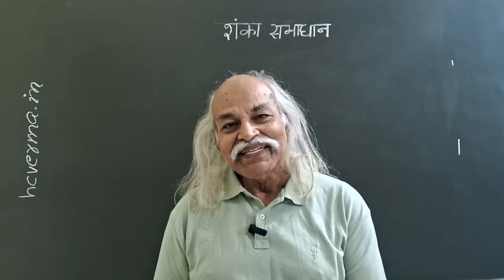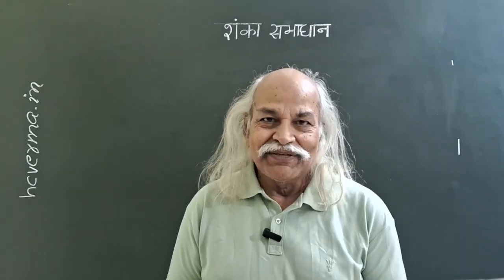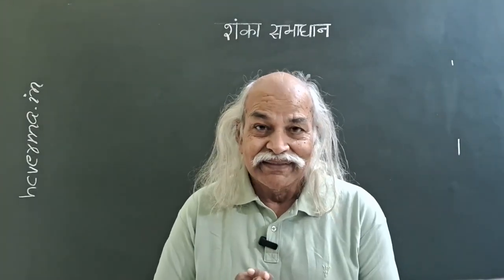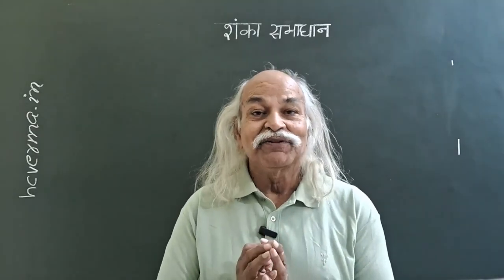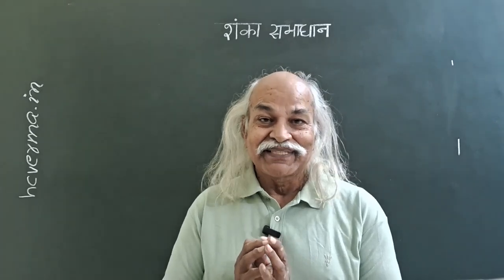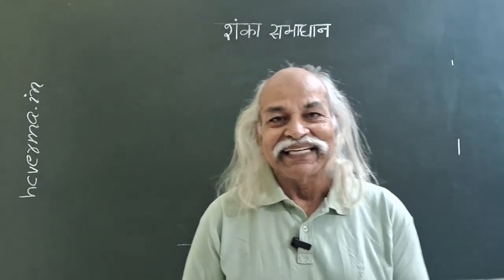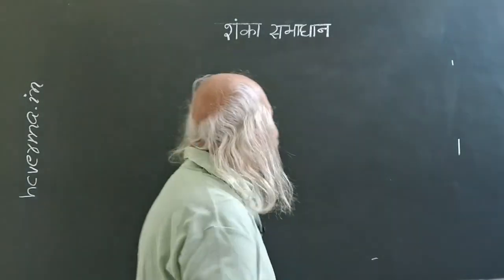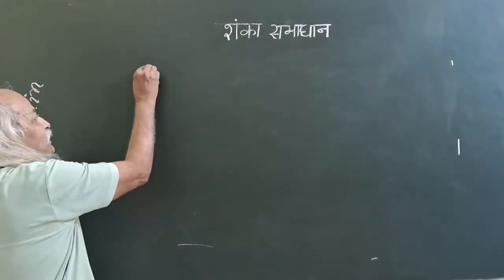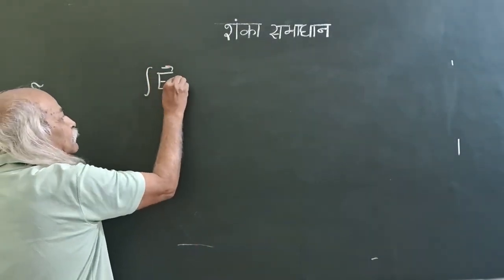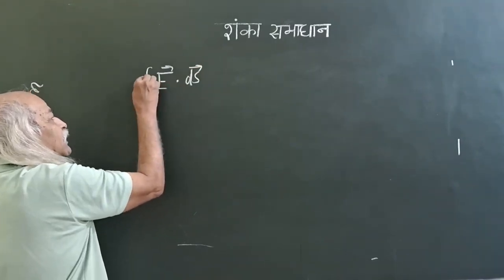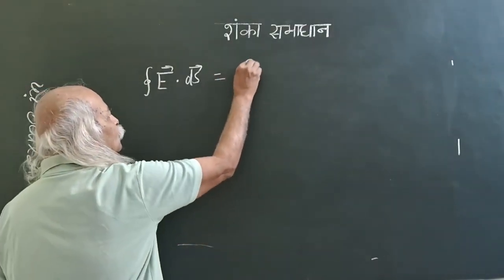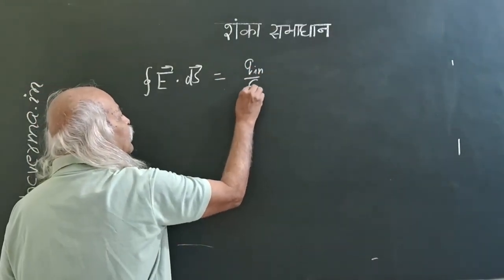Now, to understand this: Gauss's law is not about the electric field at one point. It is about the flux of the electric field on a closed surface in the form that we studied. There is another form of Gauss's law which talks point-to-point electric field also, but forget that. Our Gauss's law is written as the integration of E dot ds over a closed surface, and this is equal to q inside divided by epsilon naught.